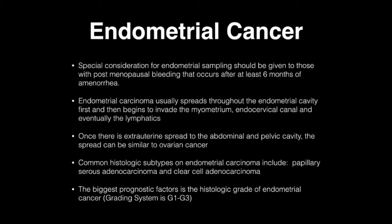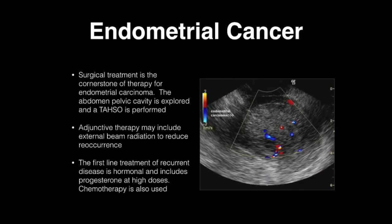Endometrial carcinoma usually spreads through the endometrial cavity first, then begins to invade the myometrium, then the cervical canal, and then the lymphatics. Once spread reaches the abdominal and pelvic cavity, the spread is similar to ovarian cancer. Common histologic types include papillary serous adenocarcinoma and clear cell carcinoma. The biggest prognostic factor is the histological grade, using a grading system of G1 to G3.